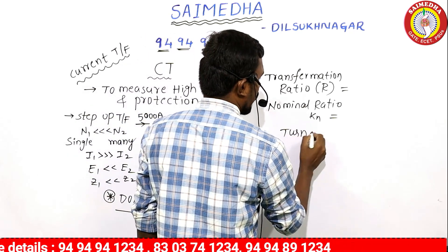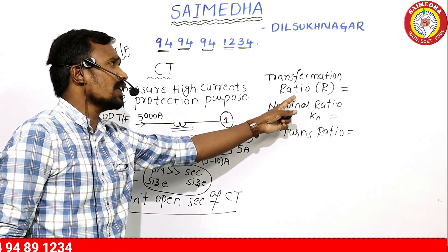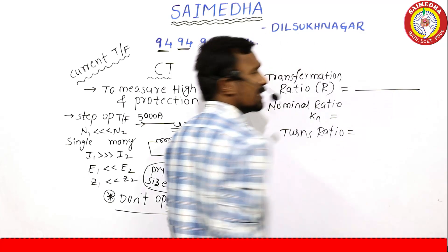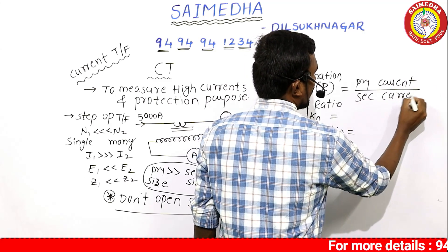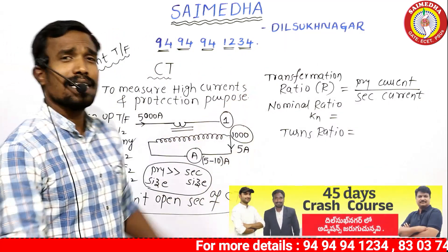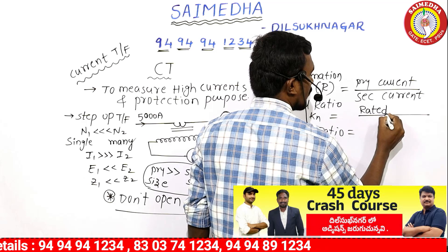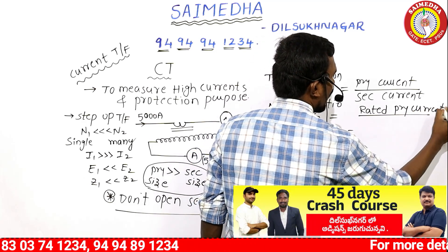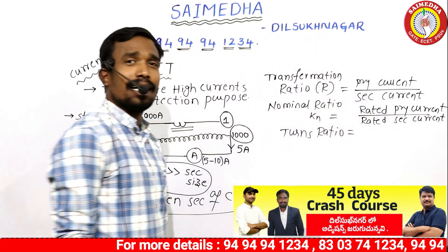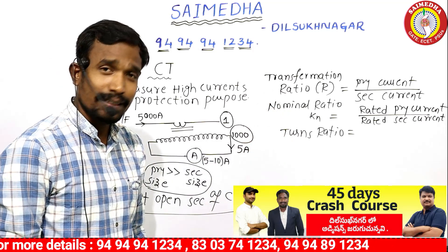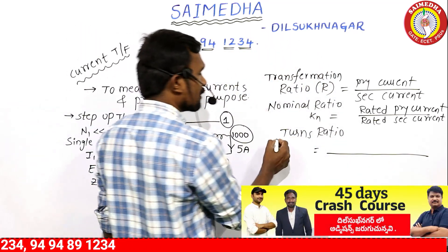Now, the Turns Ratio and Transformation Ratio of CT. The transformation ratio of CT equals primary current divided by secondary current. The nominal ratio equals rated primary current divided by rated secondary current.